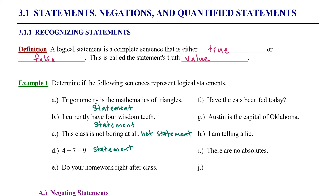Example E: do your homework right after class. Although that's great advice, it cannot be verified as either true or false. This is a command — or in the English language, we would call that an imperative. Because it is neither true nor false, we can't establish its truth value, so it is not a statement. Example F: have the cats been fed today? That's a question. Because it doesn't express something that is true or false, we say it is not a statement.